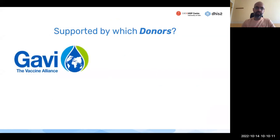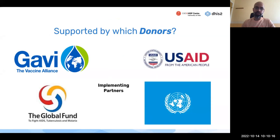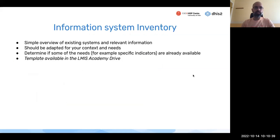Donors such as Gavi, Global Fund, UN agencies, USAID, and their implementing partners are all working and supporting these different initiatives at different levels. They also have both ongoing and planned projects, and you need to understand what they are currently doing and what they plan to do.